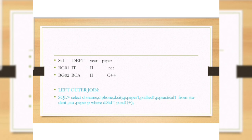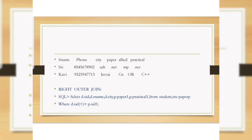Right outer join query: SELECT d.studentid, d.department, p.paper1, p.allied1, p.practical1 FROM student d, student_paper p WHERE d.sid = p.sid1. Viewing the table. Left outer join query: SELECT d.studentid, d.city, p.paper1, p.practical1 FROM student d, student_paper p WHERE d.sid = p.sid1. Viewing the table.